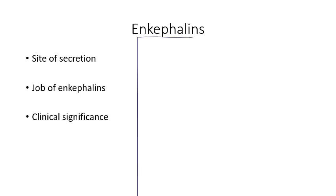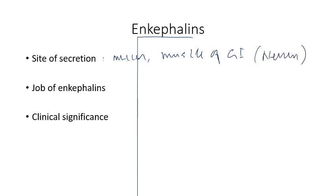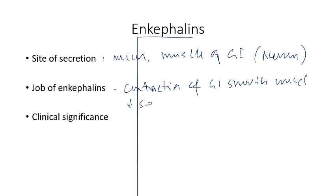Enkephalins are released from nerves in the mucosa and smooth muscle of the GI tract. The first job of enkephalins is to stimulate the contraction of GI smooth muscles. The second job is to inhibit the secretion of water and electrolytes in the GI tract. With decreased motility, contraction of sphincters, and decreased secretion of water and electrolytes, the result is constipation.